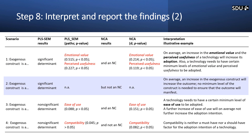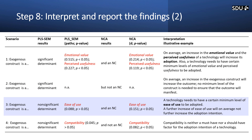For the second scenario, we don't have any variable here. For scenario number three, we have ease of use. It is not a 'should have' factor but it is a 'must have' factor. We can say that a technology needs to have a certain level of ease of use to be adopted, but a further increase in ease of use will on average not further increase the adoption intention.